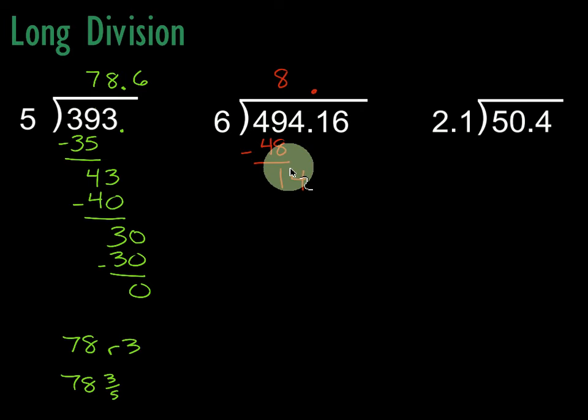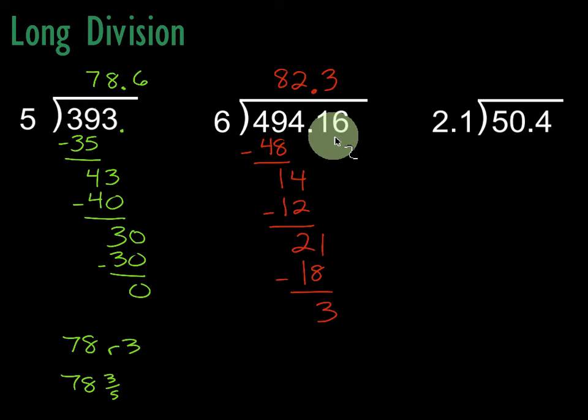Same story. 6 times what gets us close to 14? 6 times 2 is 12. We subtract: 4 minus 2 is 2, 1 minus 1 is 0. We're not going to worry about this decimal sitting up there—that shows up in our answer. Then we bring down this 1. 6 times what gets us close to 21? Well, 6 times 3 is 18. We subtract and get 3. Finally, bring down this 6. 6 times what is close to 36? 6 times 6 is exactly 36. 36 minus 36 is 0, so we're good.